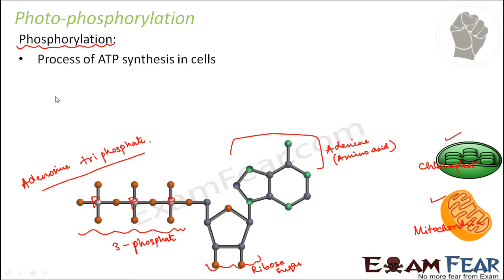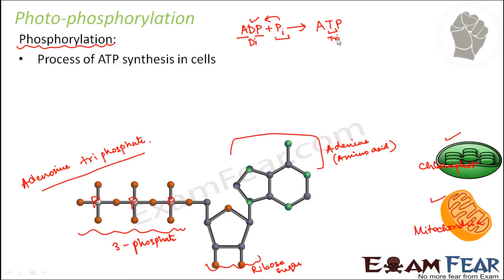Phosphorylation is the process of ATP synthesis — that is how ATP is formed. This ATP is formed from ADP, that is adenosine diphosphate, by adding an inorganic phosphate to ADP. ADP already has two phosphate groups; when you add one more phosphate it becomes triphosphate. This process of adding one inorganic phosphate group to form ATP is known as phosphorylation.